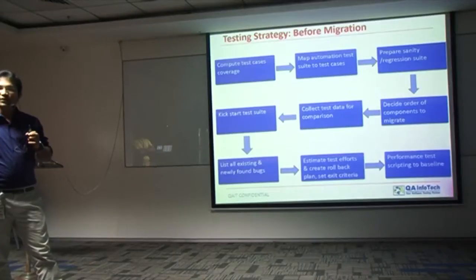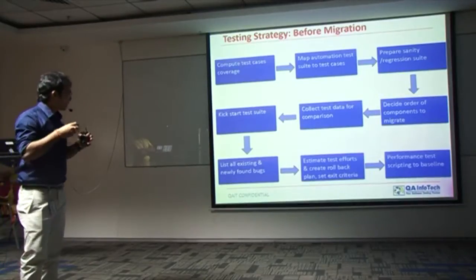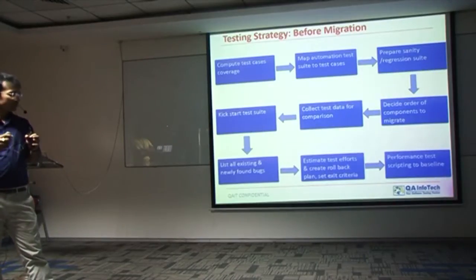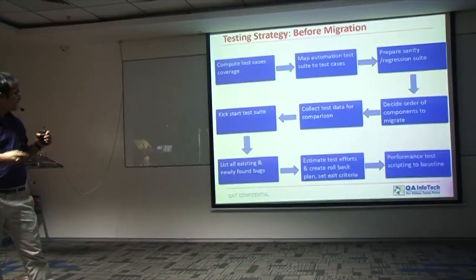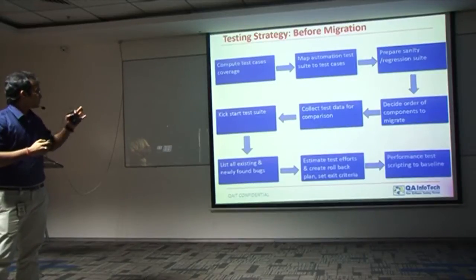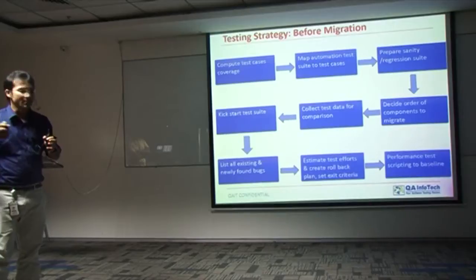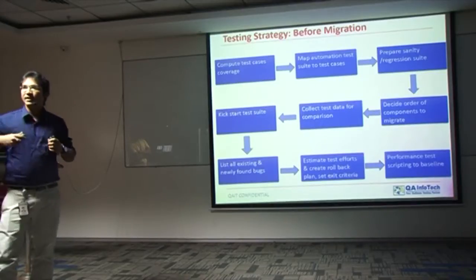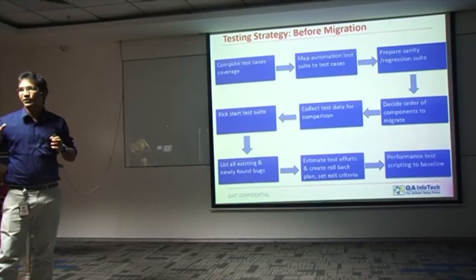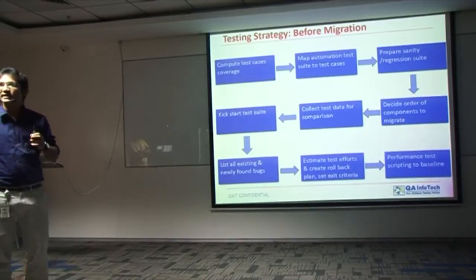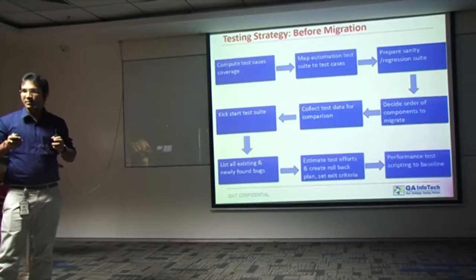We list down all existing and newly found bugs from our testing cycles, in order to understand the state of existing bugs before migration has started. Based on all those testing efforts, we then estimate our test efforts for the migration, create a rollback plan, and set the exit criteria upfront — which in our case was 100% regression tests should pass.